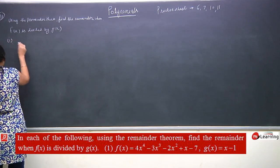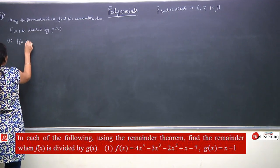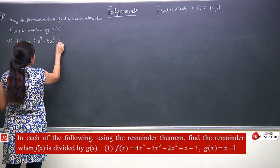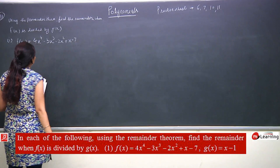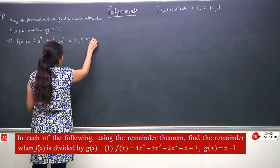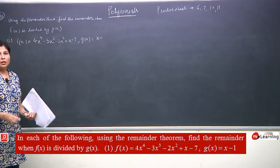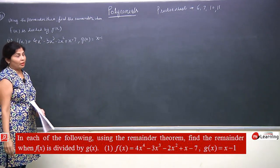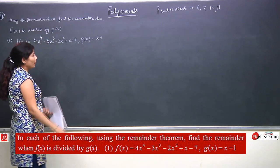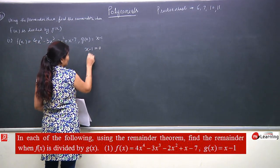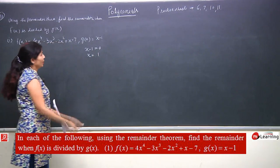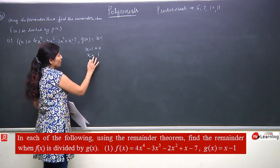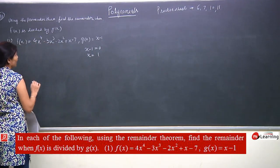The first part: f(x) equals 4x⁴ minus 3x³ minus 2x² plus x minus 7, and g(x) is x minus 1. The question asks: if we divide these two polynomials, what will be the remainder? From g(x) = x minus 1, we get x minus 1 equals 0, so x equals 1. We will put this value in the question to find the remainder.